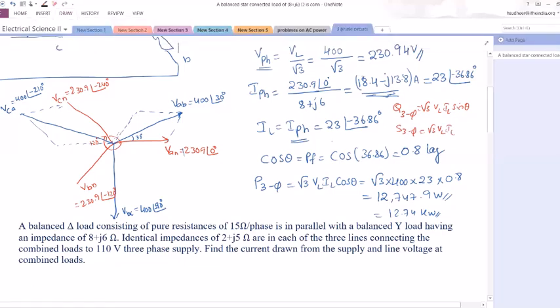Then we need to draw our line currents, which is equal to phase current. That is, IAN will be 23 at an angle lagging behind VAN by 36.86. So where you have to draw IAN? Here, I can draw IAN, lagging behind VAN by 36.86. What is IAN value? 23 at an angle of minus 36.86.